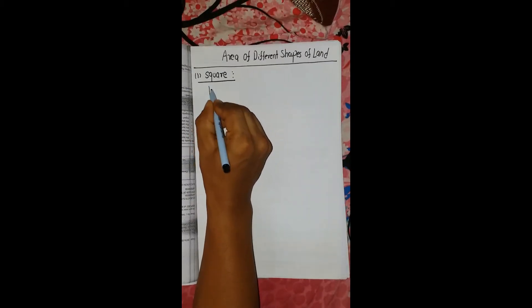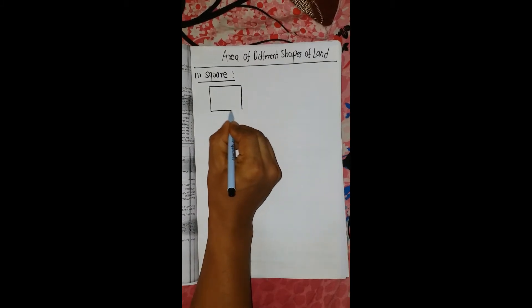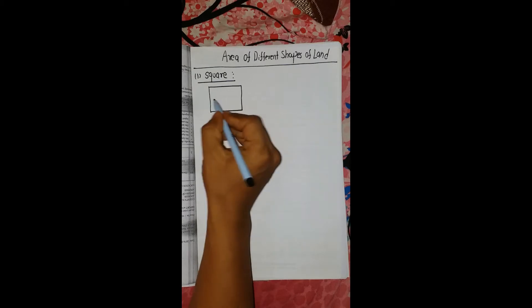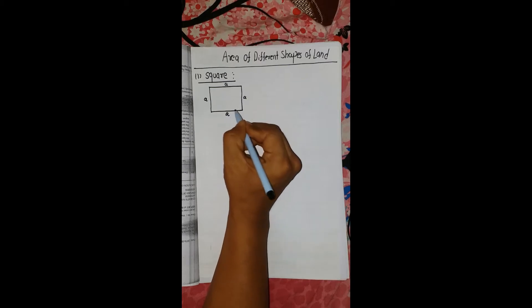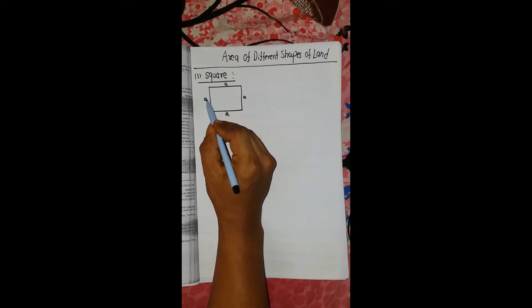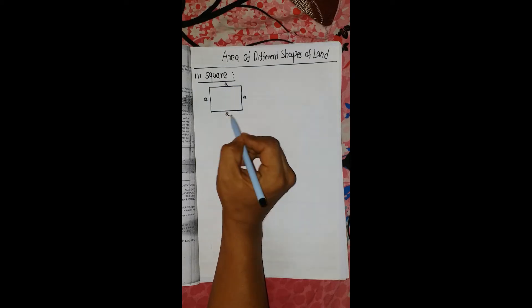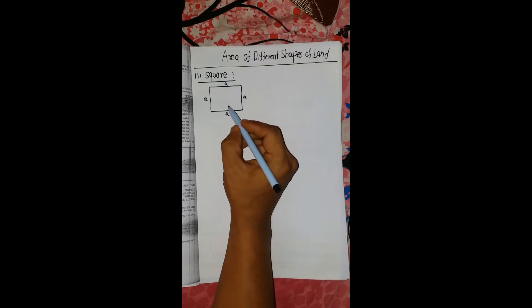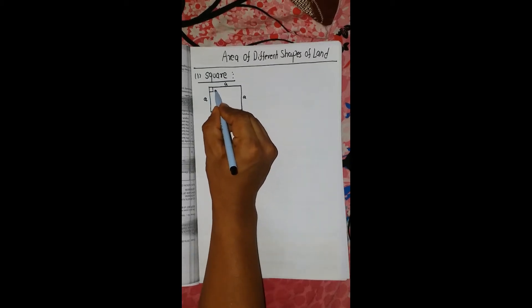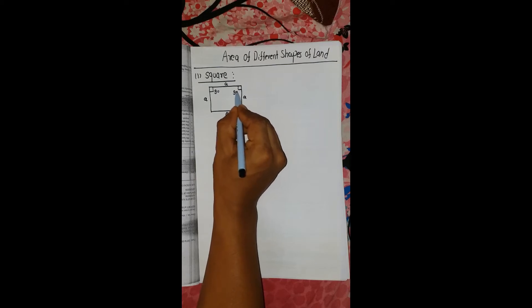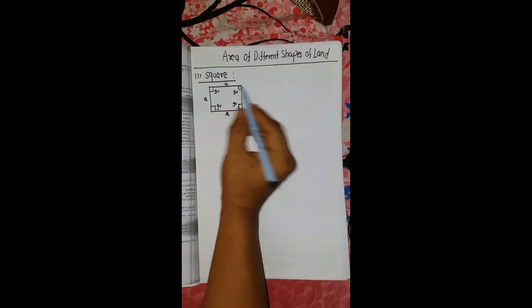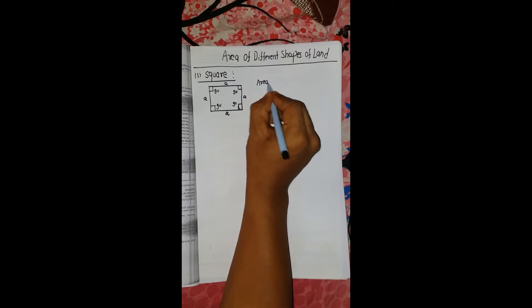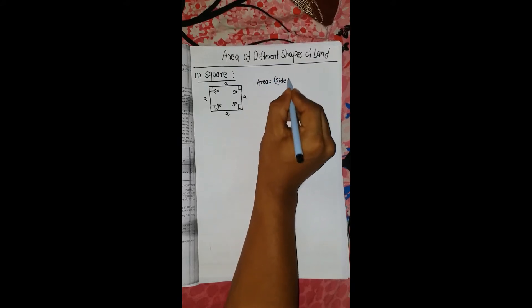A square has all four sides equal. Each side has a length — suppose side is equal to seven. All four sides are equal and each angle is 90 degrees. Since it's a square, all four angles are 90 degrees. So the area formula for a square: area is equal to side squared.